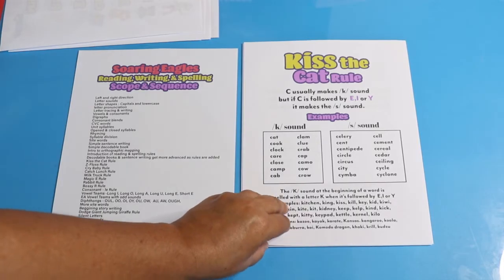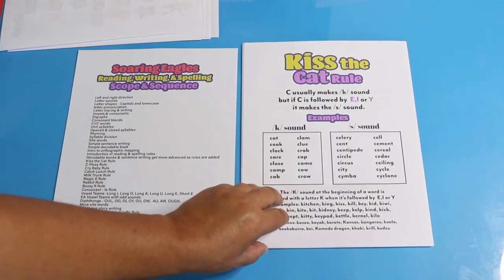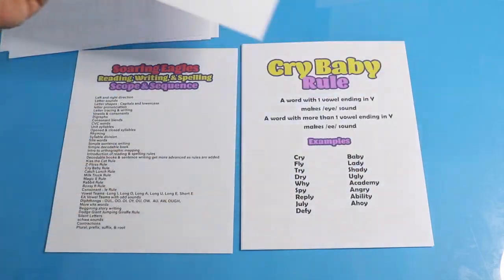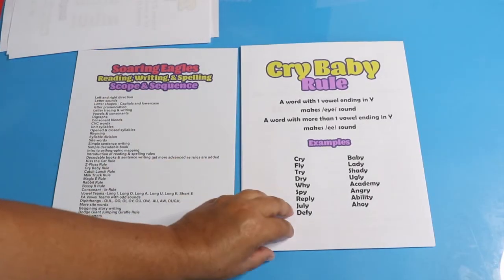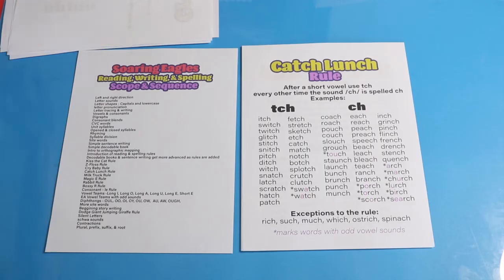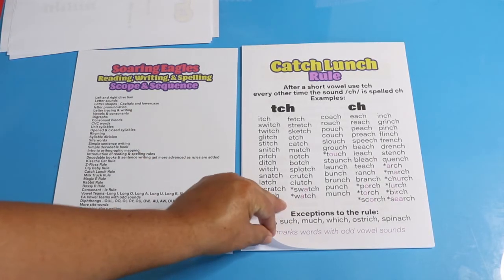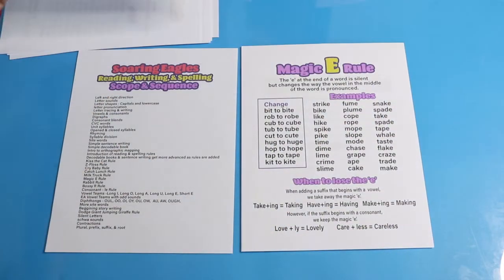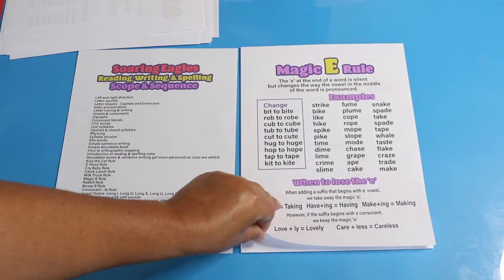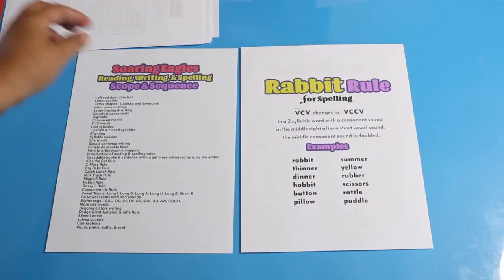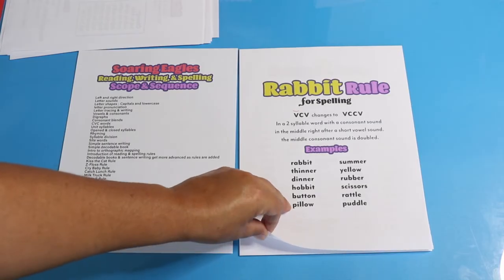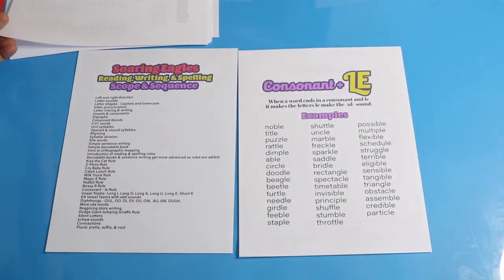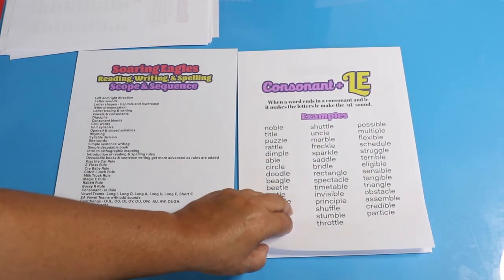The first rule covered is the Kiss the Cat rule, then the Floss rule, the Cry Baby rule, the Catch Lunch rule, the Milk Truck rule, the Magic E rule, next comes the Rabbit rule, and then the Bossy R.